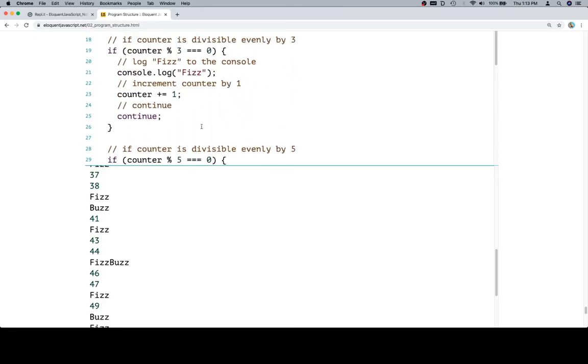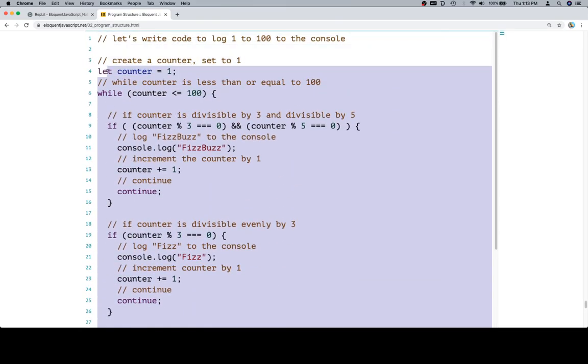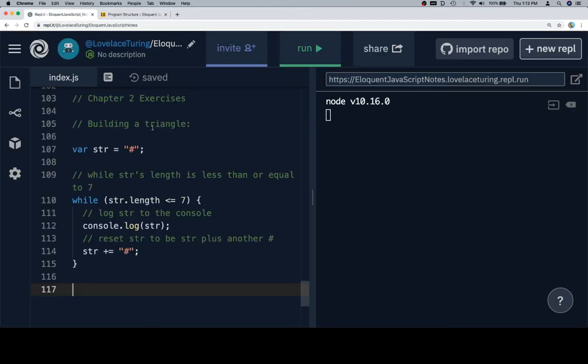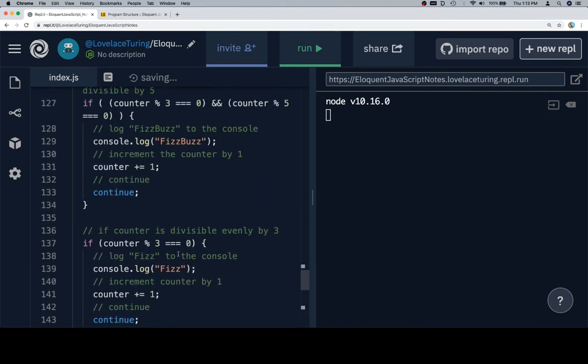For now, though, this is going to be perfectly sufficient. So let's go ahead and copy this. We'll take it over to our Replicate page where we're saving the answers, and this one is FizzBuzz, and there we go, there's the code for it. So, excellent.